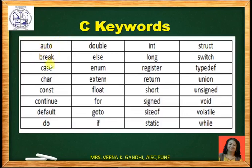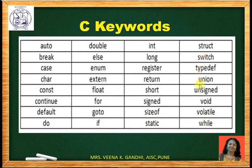These are the 32 keywords: auto, break, case, char, const, continue, default, do, double, else, enum, extern, float, for, goto, if, int, long, register, return, short, signed, sizeof, static, struct, switch, typedef, union, unsigned, void, volatile, while. By using these keywords, we can easily write a C program.